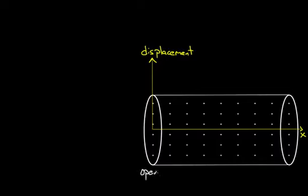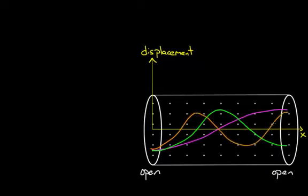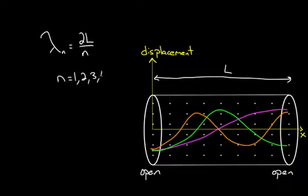Last time we saw that for an open-open tube, or a pipe where both ends were open, there were only particular wavelengths that were allowed, because you had to have anti-nodes at both ends. We found the wavelength of all of these, and we realized we can write down a formula for any possible wavelength in an open-open tube. It depends only on the length of the tube L, and N — which harmonic we're talking about. One is the fundamental, two is the second harmonic, three is the third harmonic, and so on.